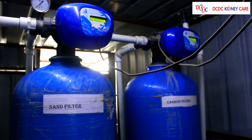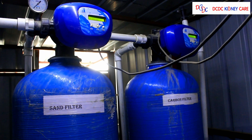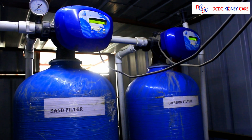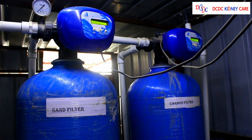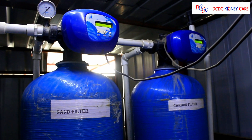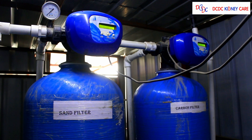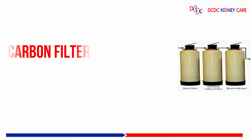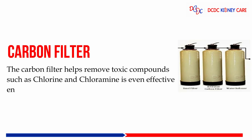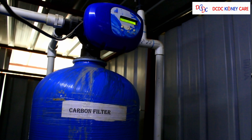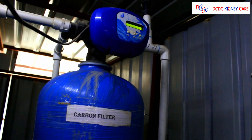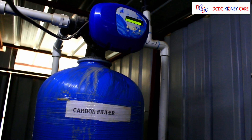The pre-filter helps protect the RO membranes from getting clogged due to exposure to sediment and chlorine. The carbon filter helps remove toxic compounds such as chlorine and chloramine, and is even effective enough to remove bad odour from water.